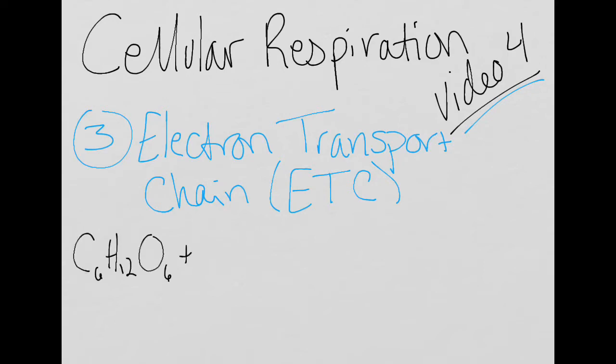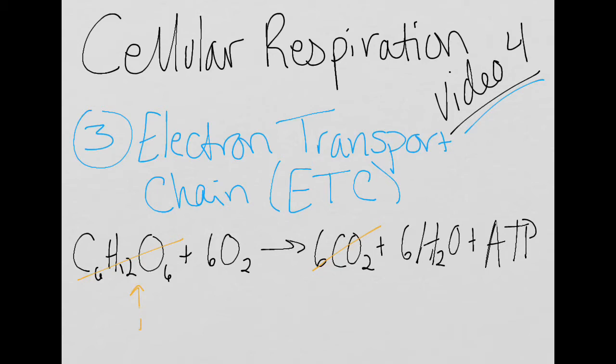C6H12O6 plus 6O2 makes 6CO2 plus 6H2O plus ATP. Let's think about what we've made so far, or used rather. We've used glucose and we have made all of our carbon dioxide. We used glucose in step number one. We made all of our carbon dioxide in step number two.